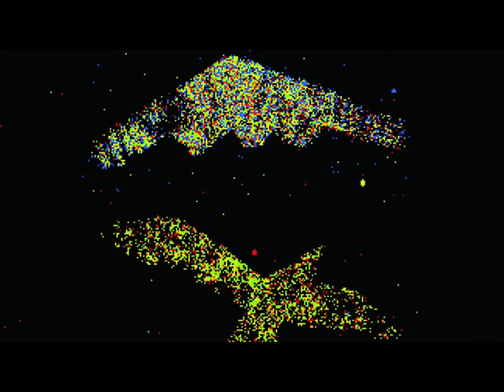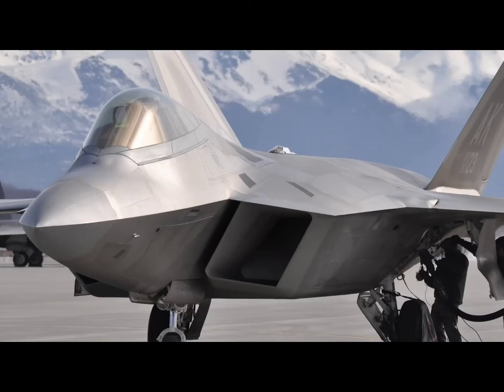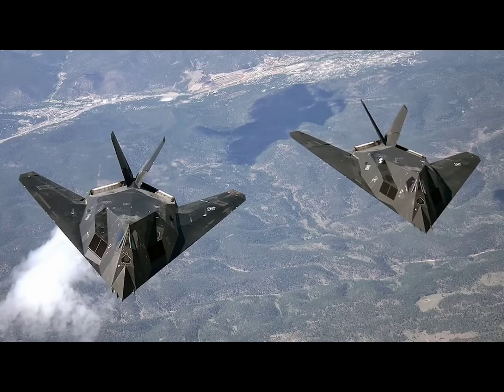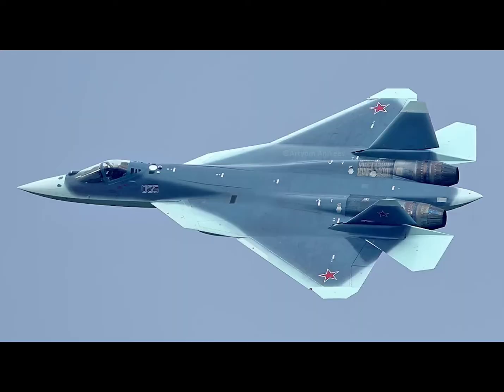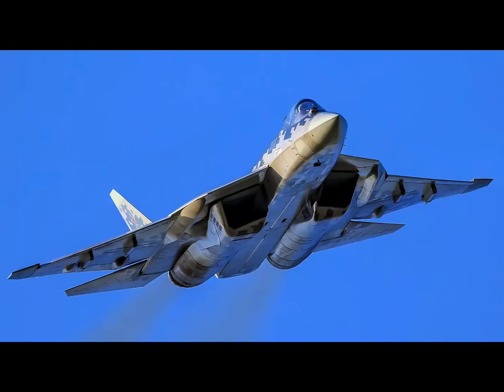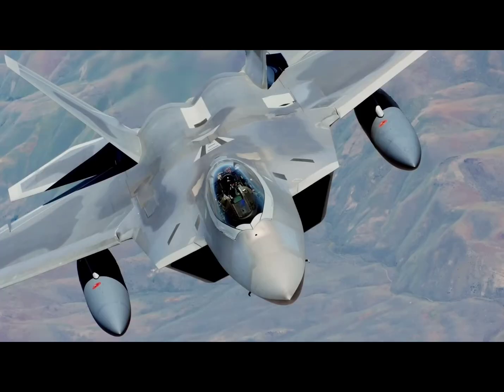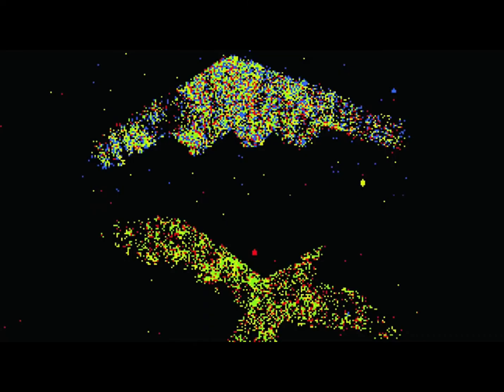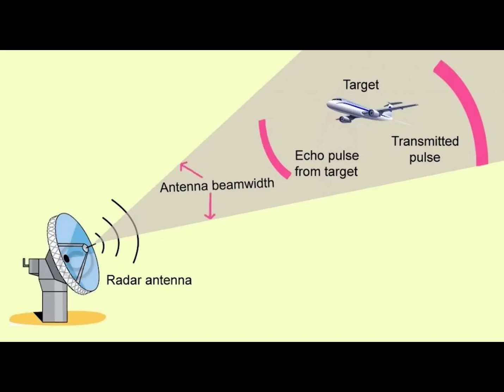As you know, stealth planes do not reflect back the radio waves that hit them. Thanks to their body geometry, they scatter radio waves in different directions or absorb radio waves thanks to the special coatings used. In this way, radio waves are not reflected in the direction they come from. Nothing is visible because nothing is reflected on the radar. In quantum radars, it's enough for photons to hit something. It does not need to be reflected back to the radio antenna. Because we have B photons that we hide.